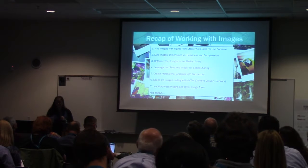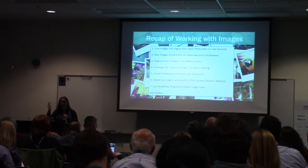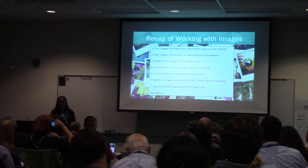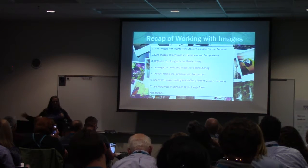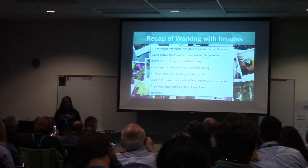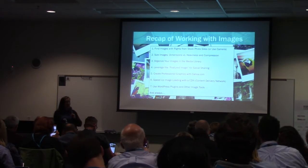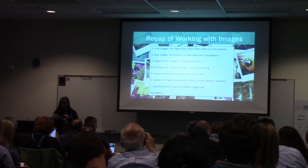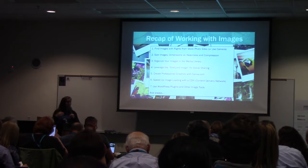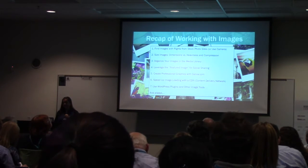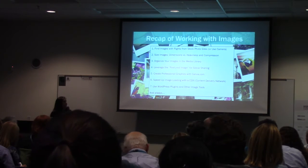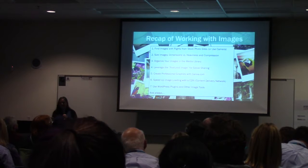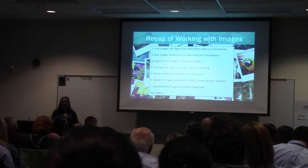Let me give you my recap. Number one: finding images with rights from your stock photo sites, making sure you have the correct rights — whether you have to give credit or not. Sizing your images for dimensions and then heaviness — size it to the right dimension, then compress it so it's as light as possible. Organizing your images in your media library so you can find stuff later. Number four: leveraging the featured image for social sharing and how it shows up on your site. Number five: create professional graphics with canva.com. Number six: speeding up your images with a CDN — a content delivery network — and using WordPress plug-ins and these other tools.